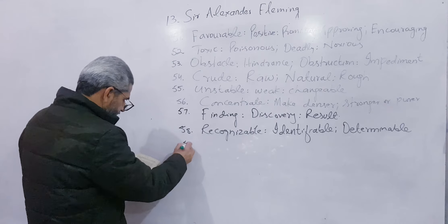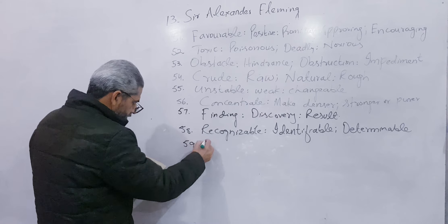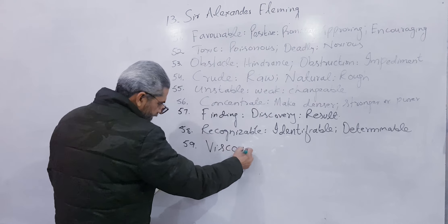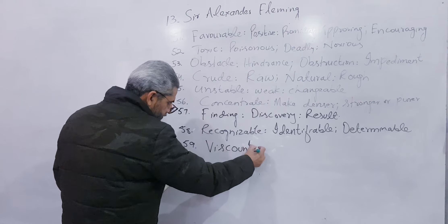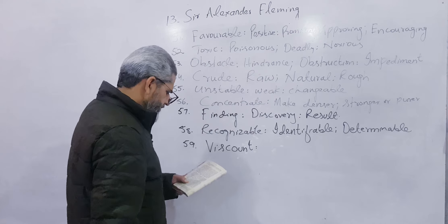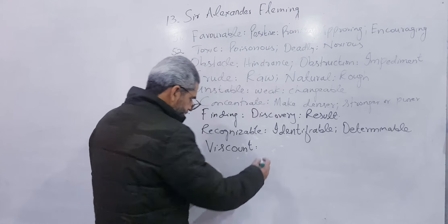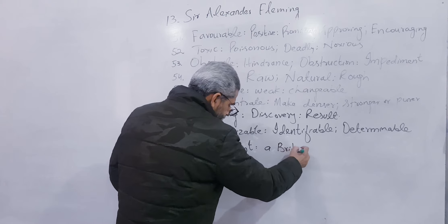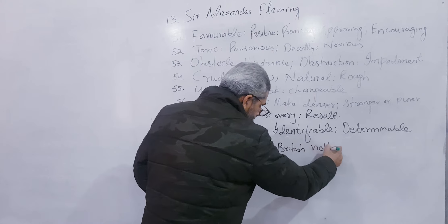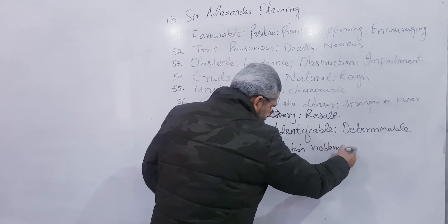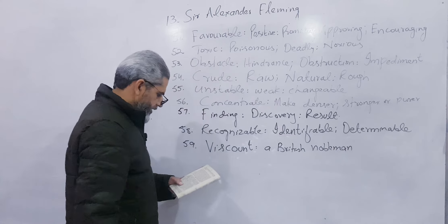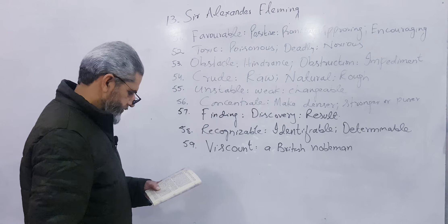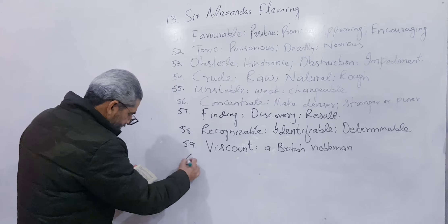Number 59: Write Viscount, V-I-S-C-O-U-N-T. This is a title in England — a British nobleman.